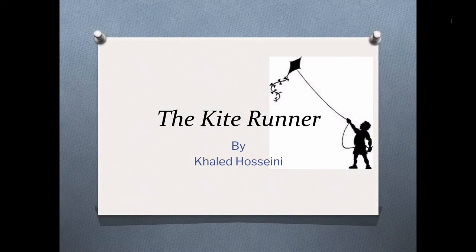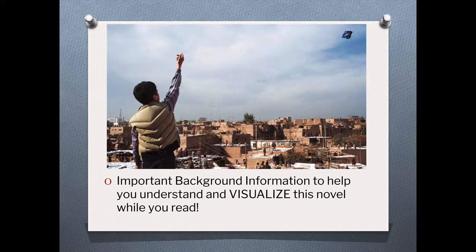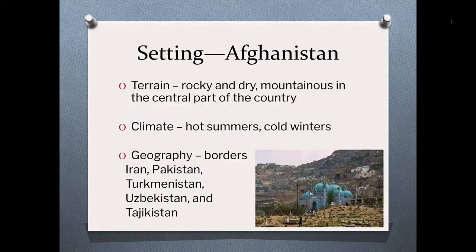Hi everybody, welcome to this quick pre-primer on historical context for The Kite Runner. We're just going to go through some stuff that's going to help you visualize the novel while you read, starting with this photo, and then just talking a little bit about the setting of Afghanistan.